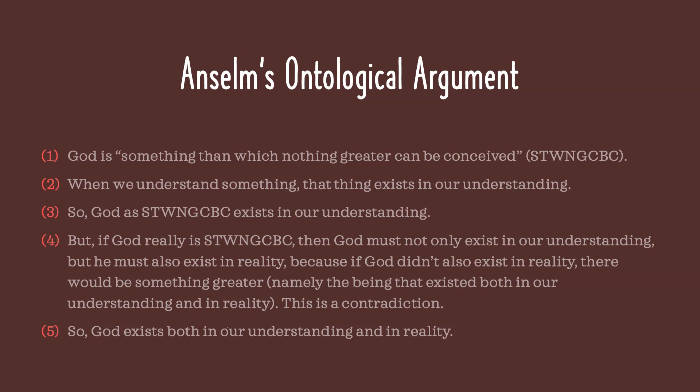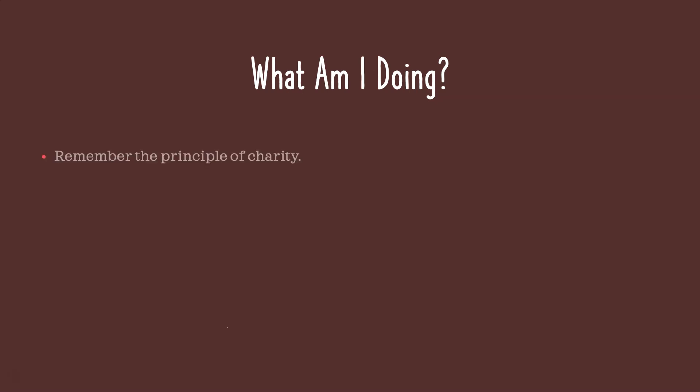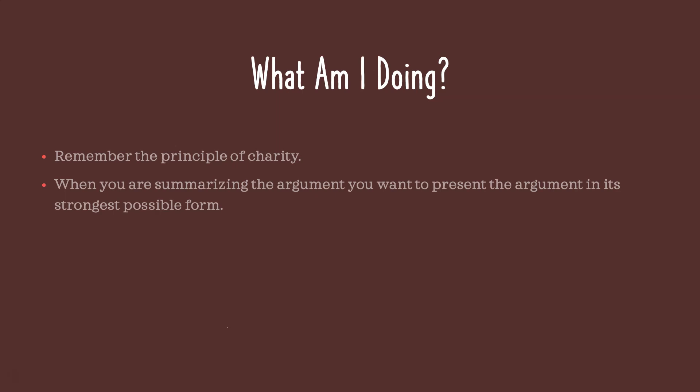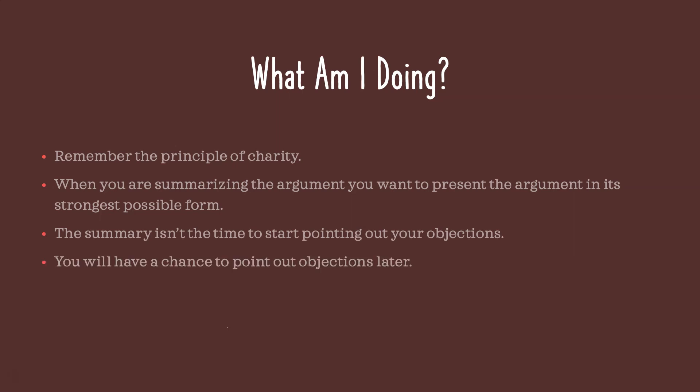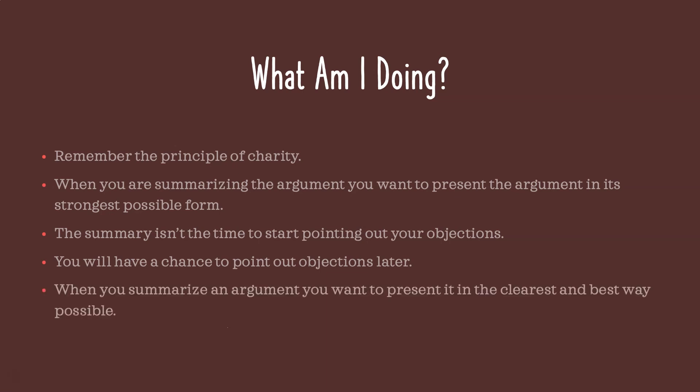So this is Anselm's ontological argument and this is what we'll start with. What is it that I'm trying to do when I'm summarizing the argument? Remember to begin with the principle of charity — we learned about that last week. When you apply the principle of charity, you want to summarize the argument and present it in its clearest and strongest possible form. The summary isn't the time to start pointing out your objections; we're going to have a chance to do that later.